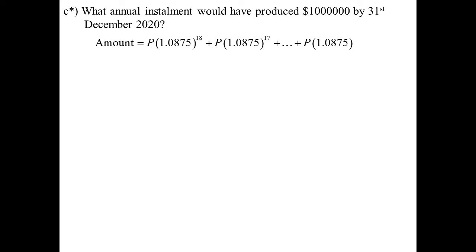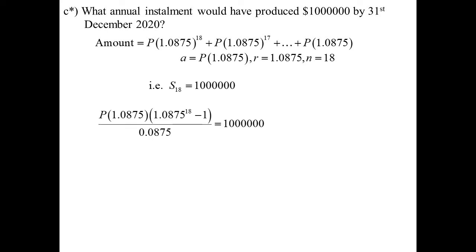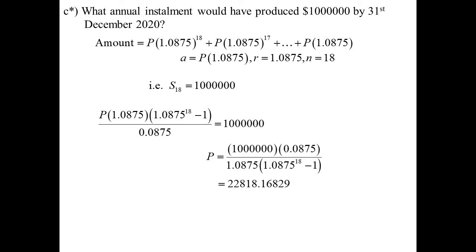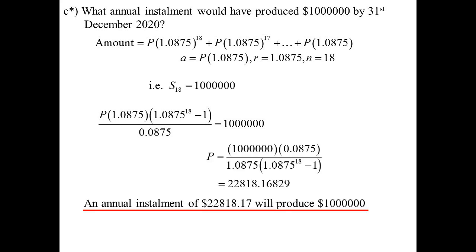Another added question: people are obsessed with a million dollars — what annual installment would have produced $1,000,000 by the 31st of December? Same series, but this time we don't know how much we're investing each year, so we call it P. We set the sum equal to $1,000,000 and solve for P. After some calculator work, if we had invested $22,818.17 every year under these conditions, we would have accumulated $1,000,000.